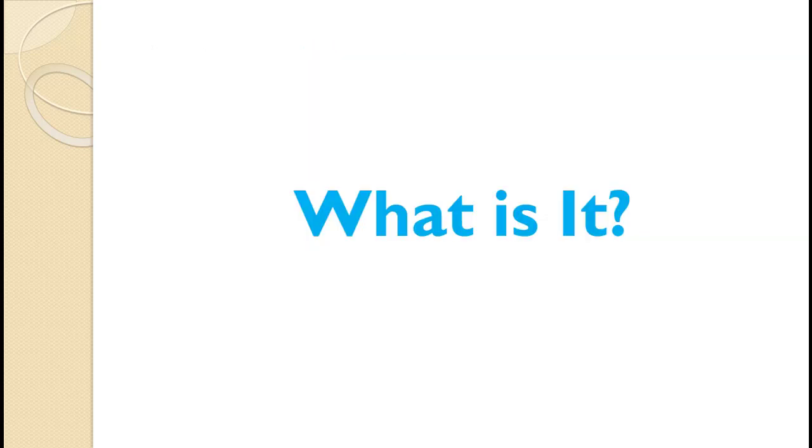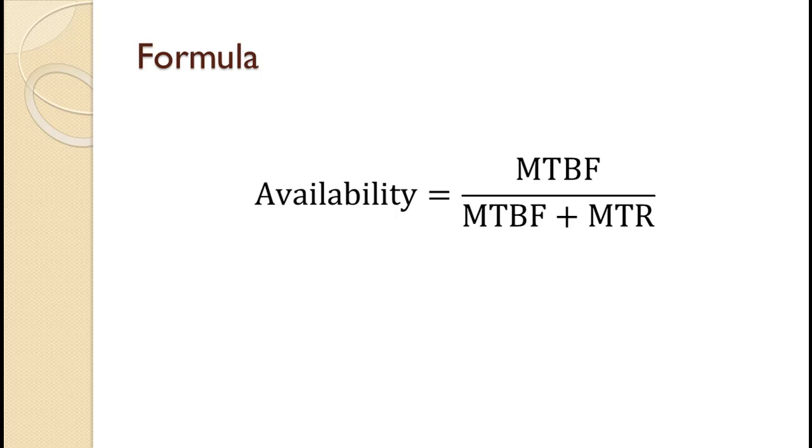In this tutorial we will see how to calculate system availability. System availability is the fraction of production time that a piece of equipment is expected to be online and able to perform its operation. System availability is often referred to as just availability.